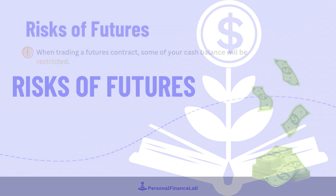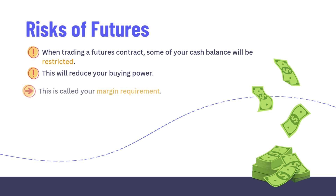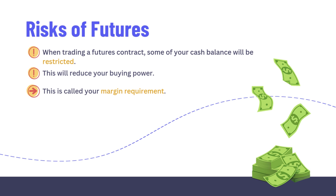When you place an order for a futures contract, your cash balance remains intact but some is restricted. This restricted amount is set aside from your available cash balance, which will reduce your buying power. This is called the margin requirement.